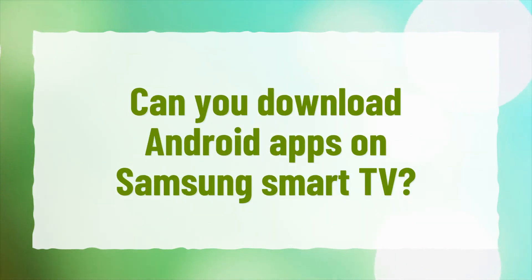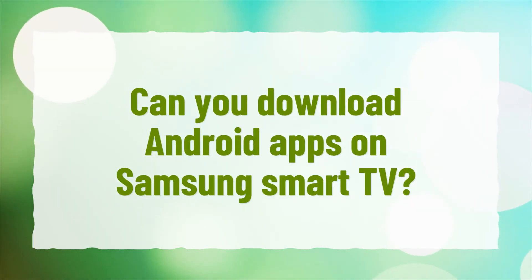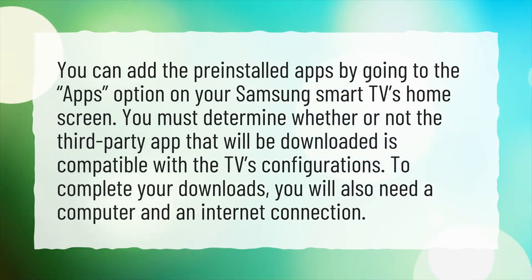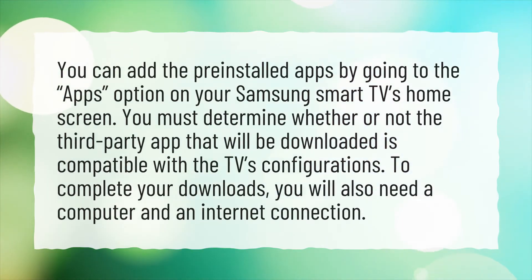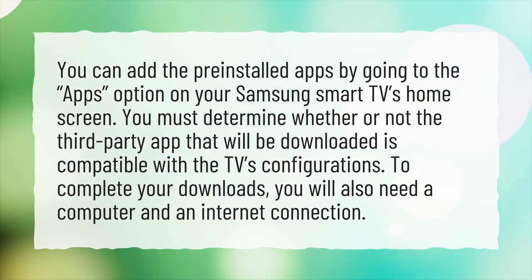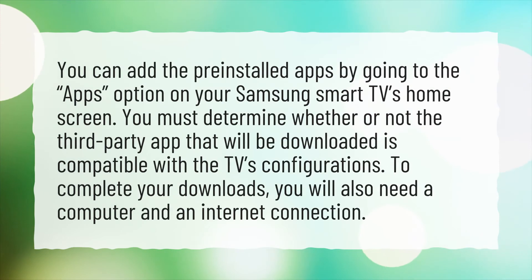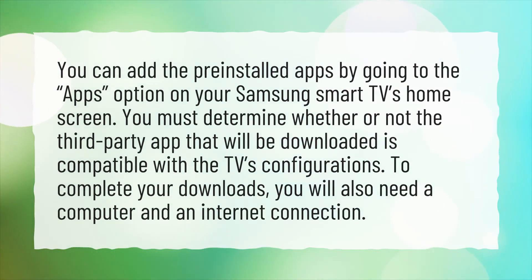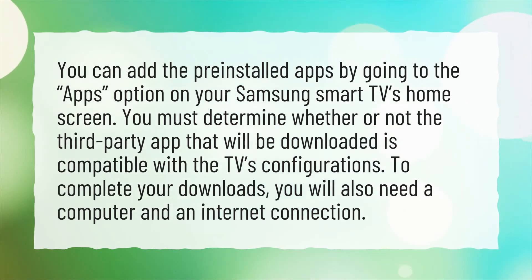Can you download Android apps on Samsung Smart TV? You can add pre-installed apps by going to the Apps option on your Samsung Smart TV's home screen. You must determine whether the third-party app you want to download is compatible with the TV's configurations. To complete your downloads, you will also need a computer and an internet connection.